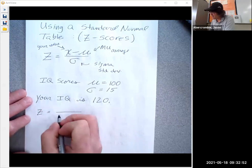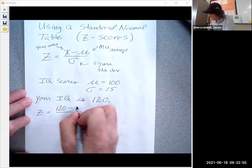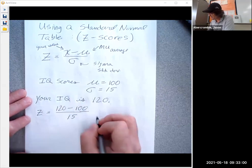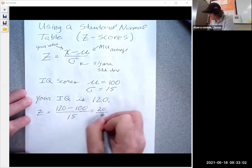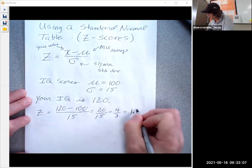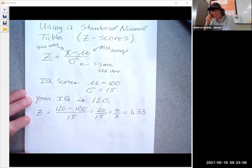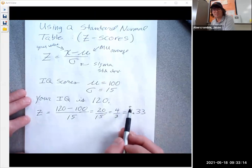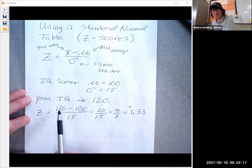Z is 120 minus 100 over 15. That's going to be 20 over 15, which reduces to four-thirds, and ultimately in decimal form that's 1.33. So my z-score is 1.33. First of all, it's positive, so I know I'm above average. If I were to put in 100 here, 100 minus 100 is zero. If your z-score is zero, you are exactly average. So positive means you're above average.